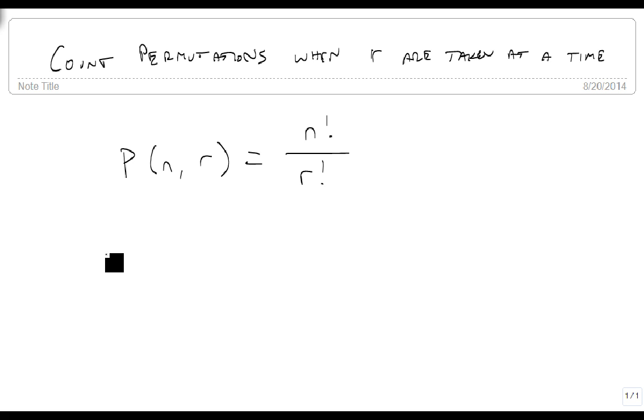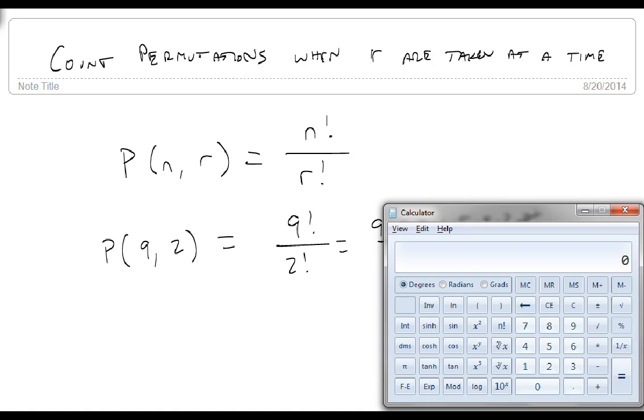So for instance, let's just suppose that we do P, the permutations where we have 9 total objects and we take 2 of them. Well, this is 9 factorial over 2 factorial, which is 9 times 8 times 7 times 6 times 5 times 4 times 3 times 2 factorial over 2 factorial. The 2 factorials go away, and we get out our calculator again.